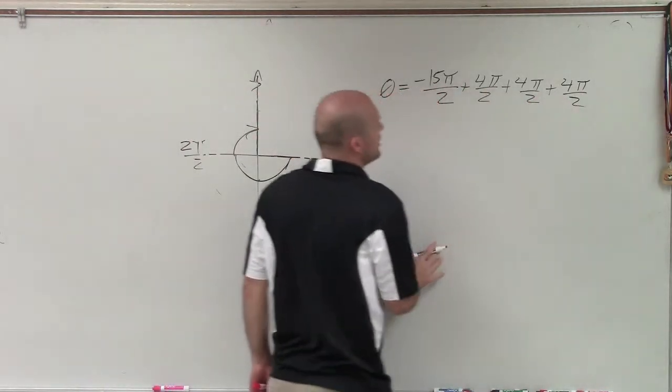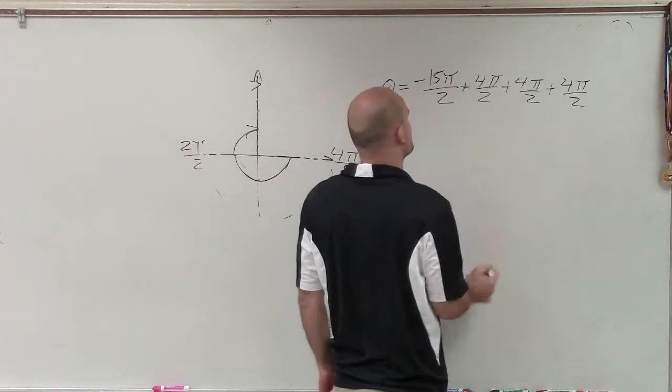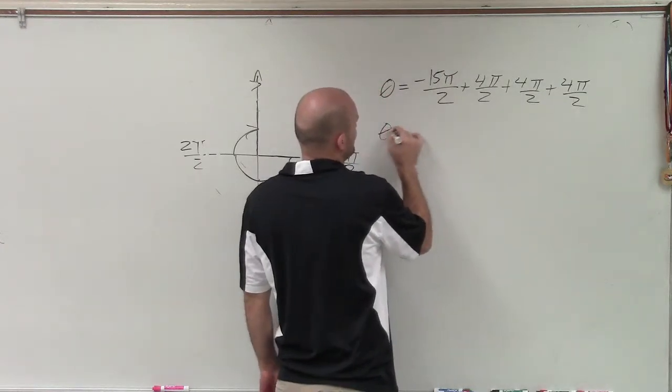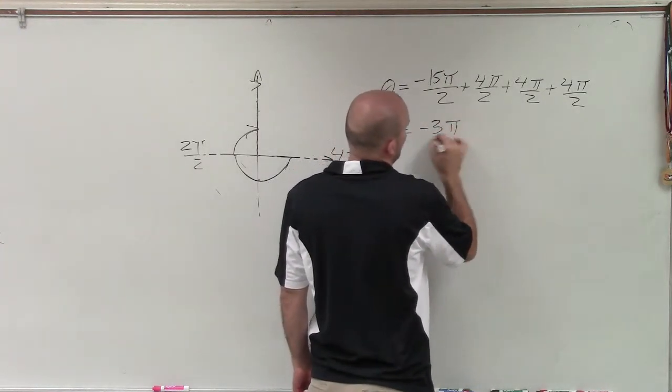So now I need to determine, well, what is going to be all this? Well, 4 plus 4 plus 4 is going to be 12. Therefore, that's going to equal theta equals negative 3 pi over 2.